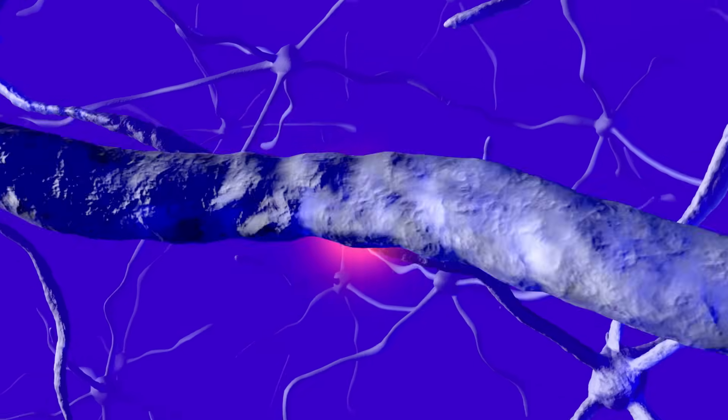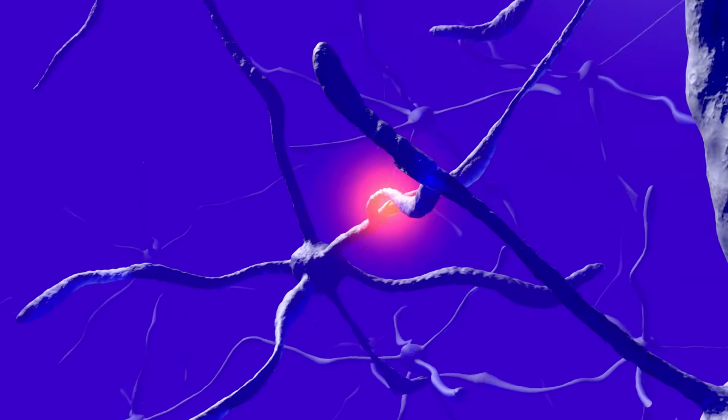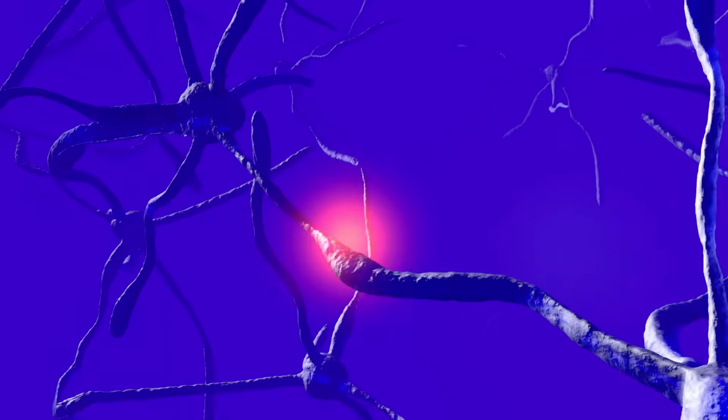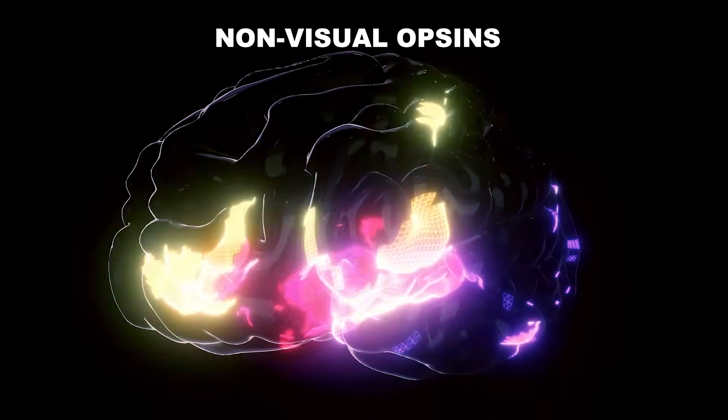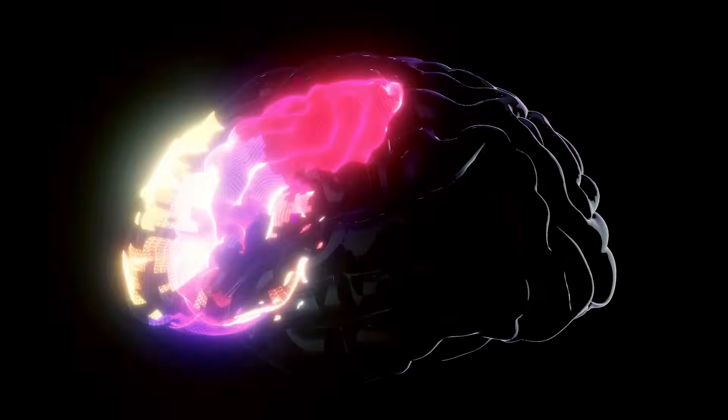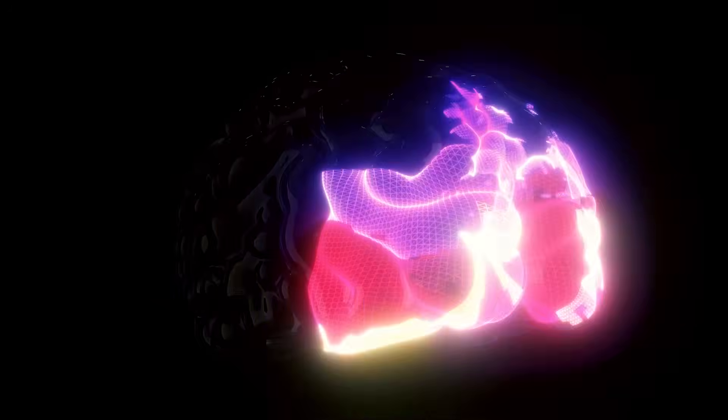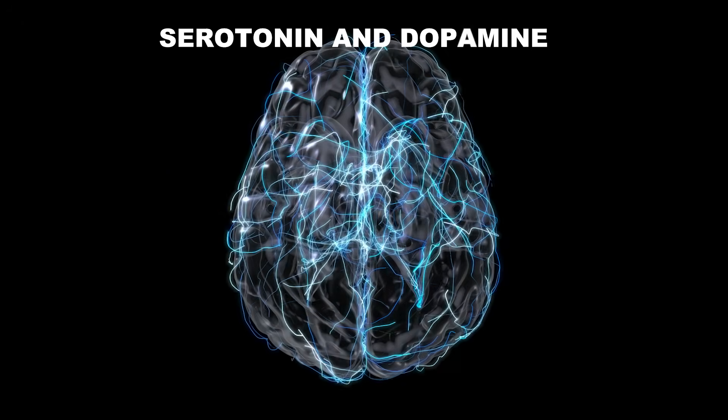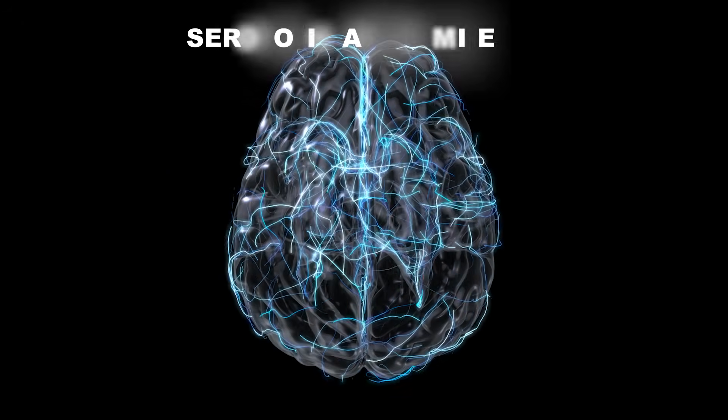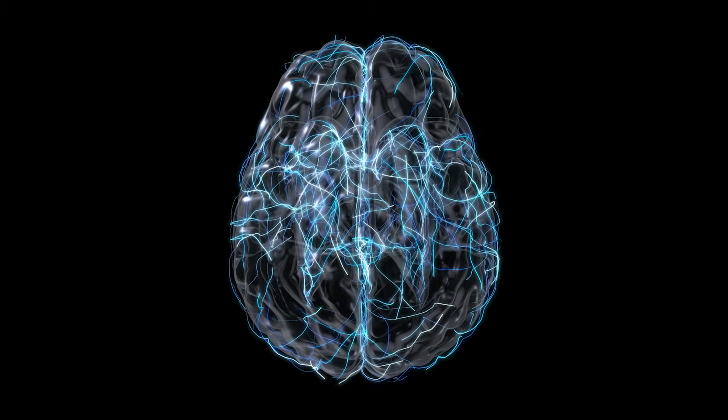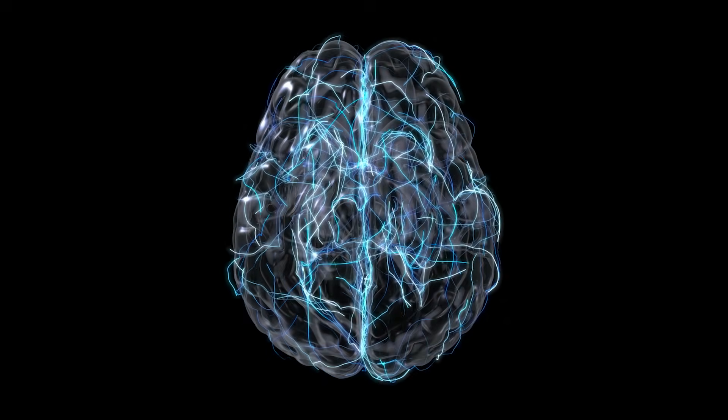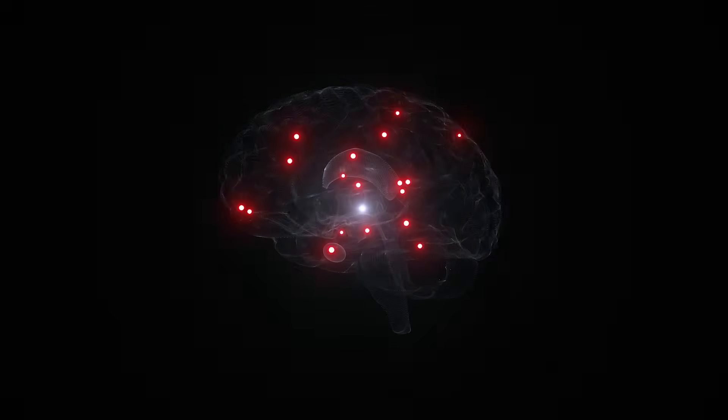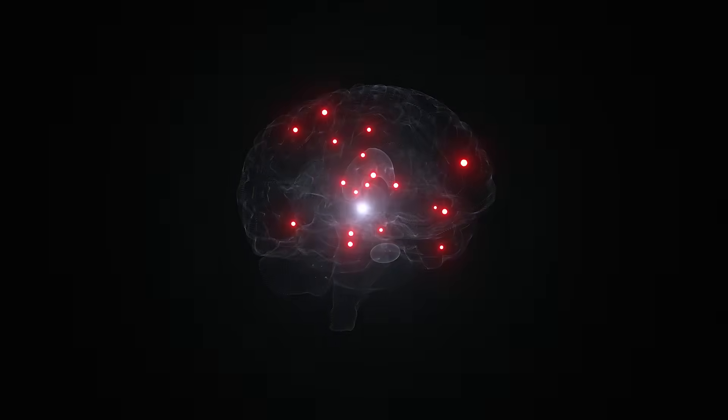But here's where it gets really intriguing. Your brain contains specific photoactive molecules that contribute to this light production. Non-visual opsins, the same family of proteins that help your eyes detect light, are scattered throughout neural tissue. Additionally, neural transmitters like serotonin and dopamine have autofluorescent properties, meaning they can't absorb light at one wavelength and emit it at another. Your brain isn't just thinking. It's literally glowing with the biochemical activity of consciousness itself.